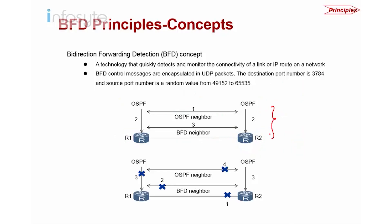Assuming everything is fine — BFD is running, OSPF is also running. When a problem occurs, such as a link-layer failure, BFD detects the failure in milliseconds. When BFD detects the problem, it notifies OSPF that the neighbor is down. Even though OSPF has its own hello packets, OSPF will depend on BFD for neighbor status. When BFD reports the neighbor as down, OSPF will look for the next available hop, making the switchover very fast — this is how we reduce MTTR.